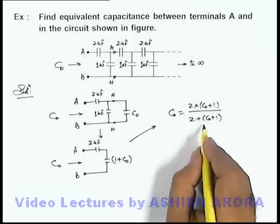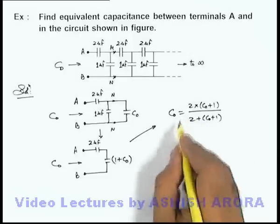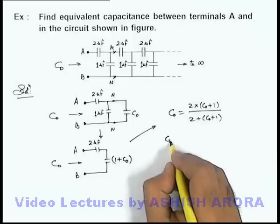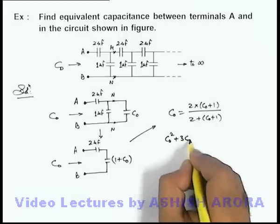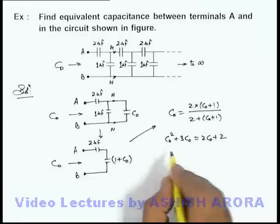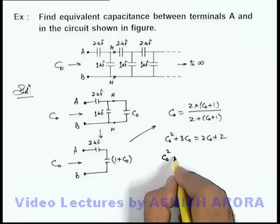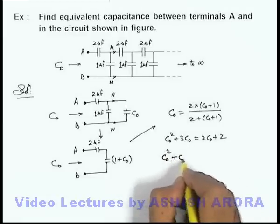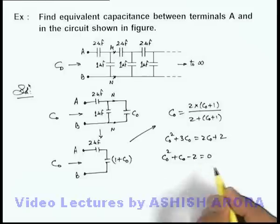And if we simplify this expression on cross multiplying we can see we are getting C₀ square plus 3 C₀ is equal to 2 C₀ plus 2. So on further simplifying we are getting C₀ square plus C₀ minus 2 is equal to zero.